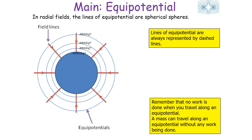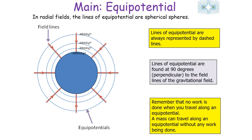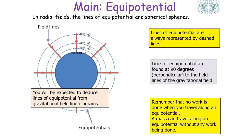Lines of equipotential are always represented by dashed lines. No work is done when a massive object travels along an equipotential plane because there is no change in potential. The lines of equipotential are always found at 90 degrees — perpendicular — to the gravitational field lines. You would be expected to deduce lines of equipotential from gravitational field line diagrams.